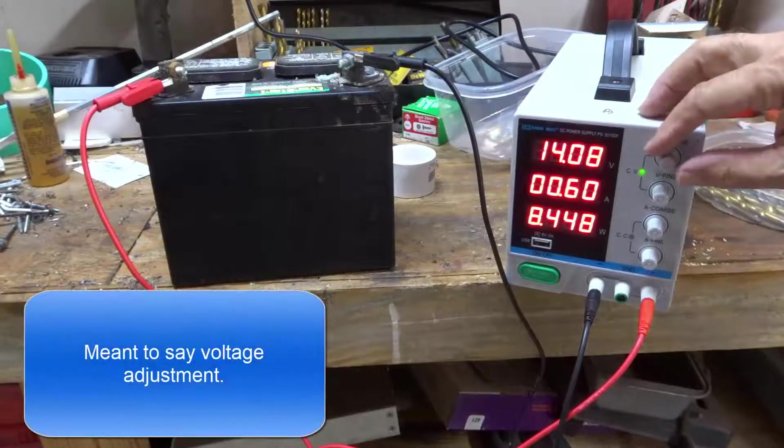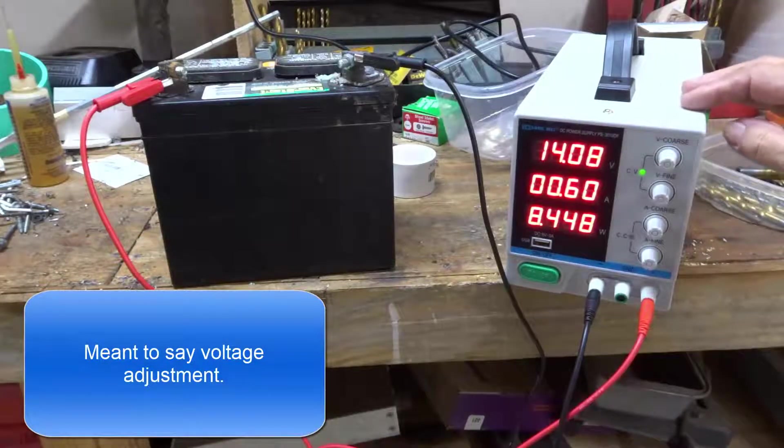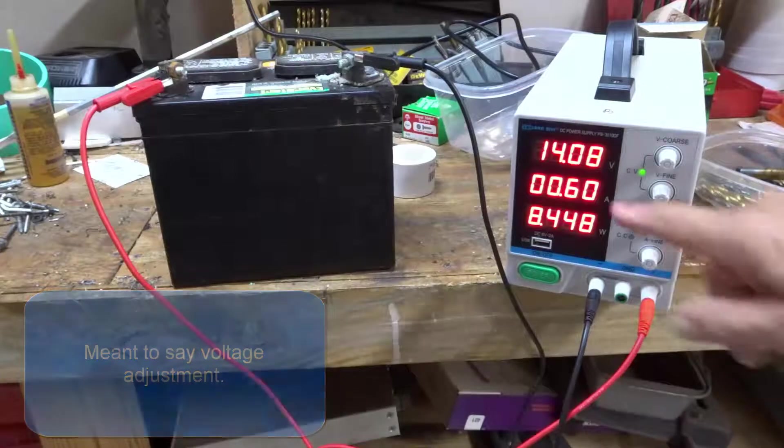Notice if I set the current for 14.8, this battery has a normal charge on it. It's pretty much charged up. It's drawing 0.6 amps.